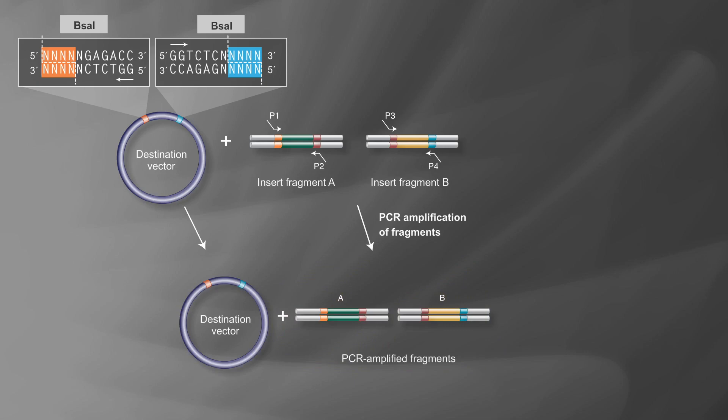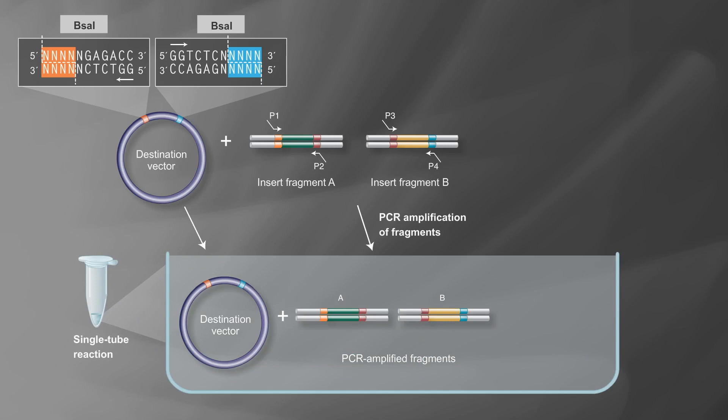In either case, the PCR-amplified fragments are ready to be assembled into the destination vector in a single tube reaction containing BSA1 and T4 DNA ligase. Cleavage with BSA1 exposes complementary sequences for fragment assembly.